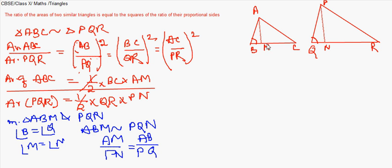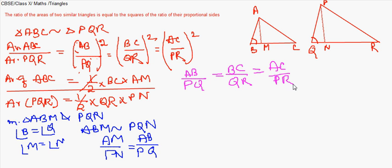Once that similarity is proved, we can write the proportionality: AM/PN = AB/PQ. Also, since the whole triangles ABC and PQR are given similar, we can derive AB/PQ = BC/QR = AC/PR.